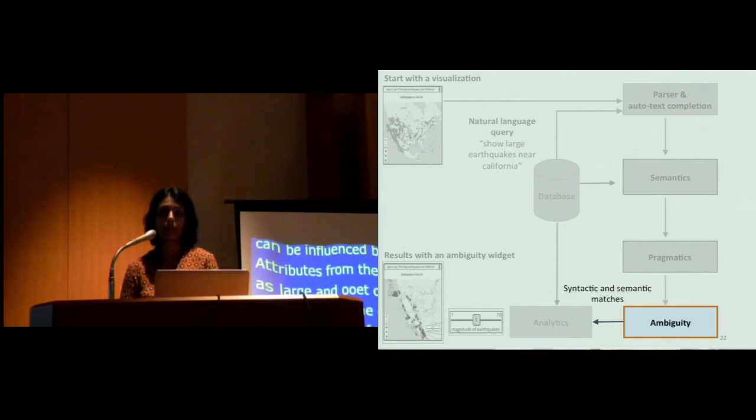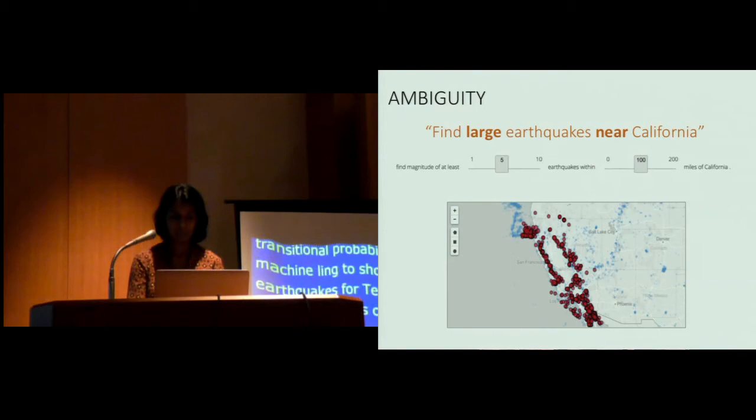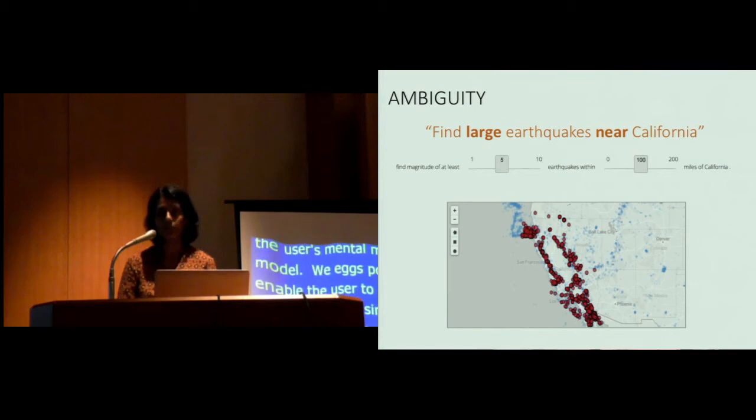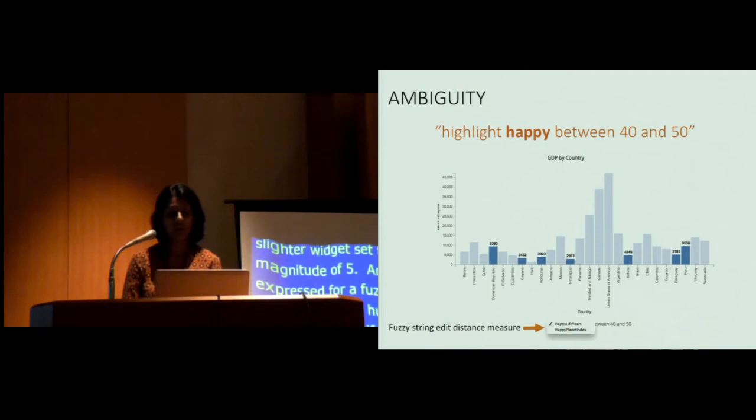Natural language queries can inherently be ambiguous due to syntactic and semantic variations between the user's mental model and the system's model. We expose the ambiguity and enable the user to correct default choices through simple GUI widgets in the interface. Consider this query. Ambiguity for large is expressed as a slider widget set to a minimum magnitude of 5. Similarly, an ambiguity slider is expressed for a fuzzy distance near, which is initially set to 100 miles around the center of California, automatically computed based on the density of points per unit area on the map. We also support syntactic ambiguity resulting from spelling and plurality variations and typos. Here is a system maps happy to two attributes, happy life years and happy planet index ranked by a fuzzy string distance measure.